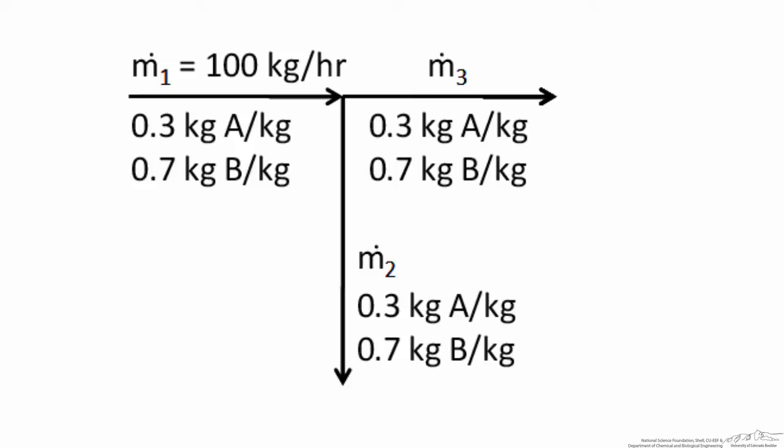The input to our split point is fully specified. We have a flow rate of 100 kg per hour and we have a specified composition of 30% A and 70% B.